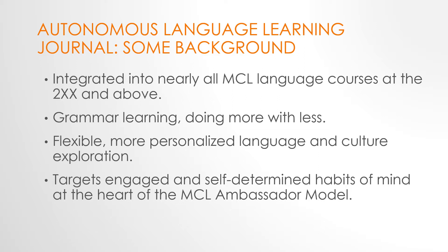Some background on the Autonomous Language Learning Journal. It is established for all MCL language courses at the 301 level. In advanced certificates and Spanish programs, it's implemented at the 200 level. When it comes to grammar learning, the Autonomous Language Learning Journal means integrating less grammar and working with it more meaningfully. It also offers the context for more flexible and personalized engagement with language and culture learning in ways that are more meaningful to you. At its core, this unique and innovative course concept targets engaged and self-determined habits of mind at the heart of the Ambassador Model and its vision of how MCL students will exit their course of study.